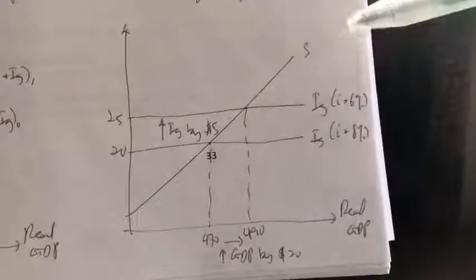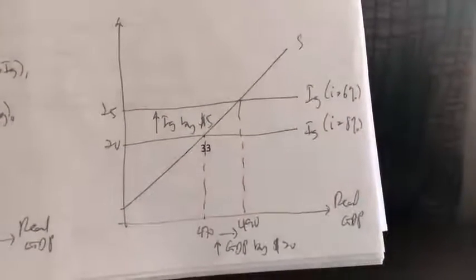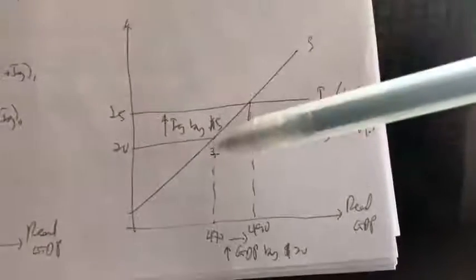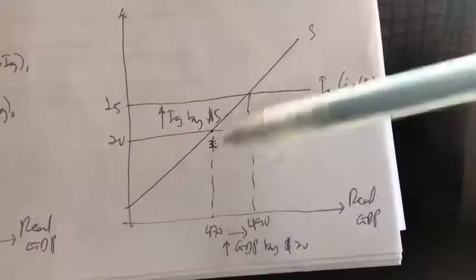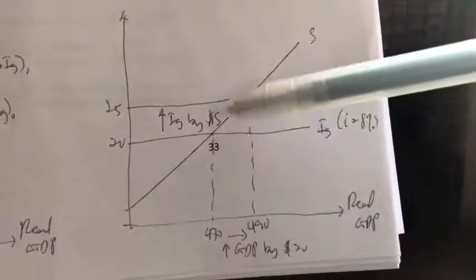So, this S line here is a given. It's upward sloping. Go back to our previous lecture video. Okay, so initially, this was our equilibrium point, $470 billion. When investment schedule increases by $5 billion, okay, we will intersect at another point, at the S curve here.